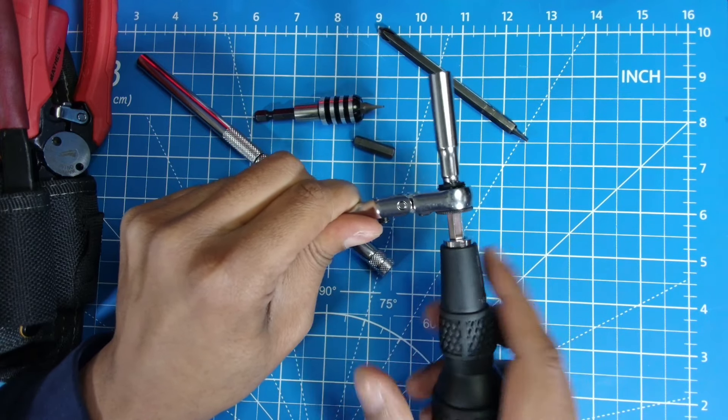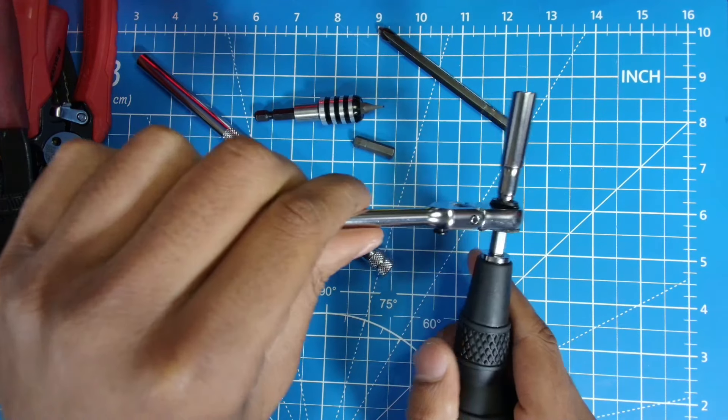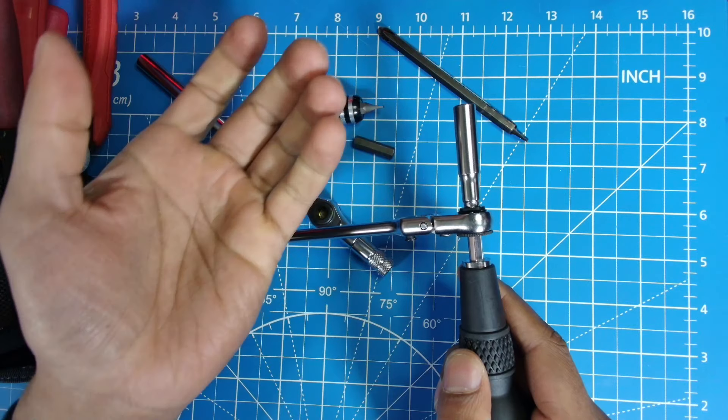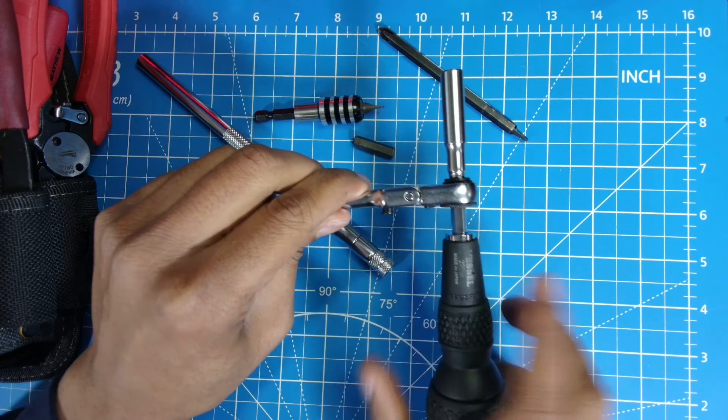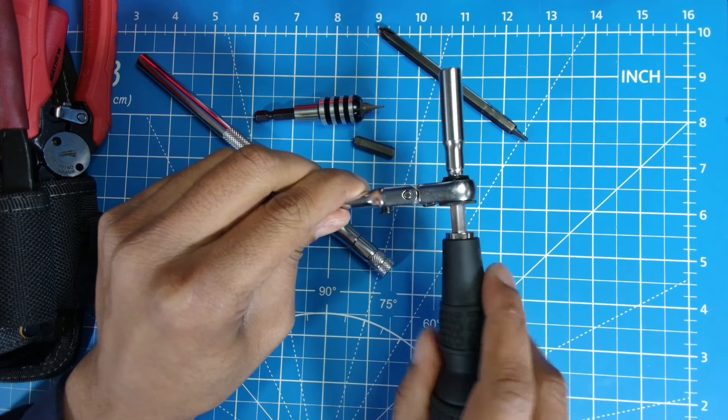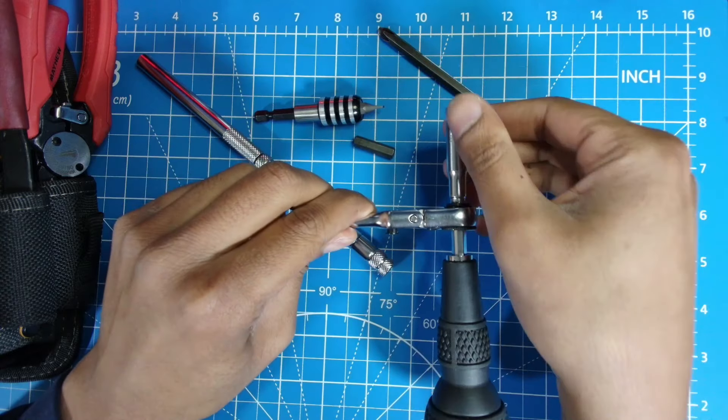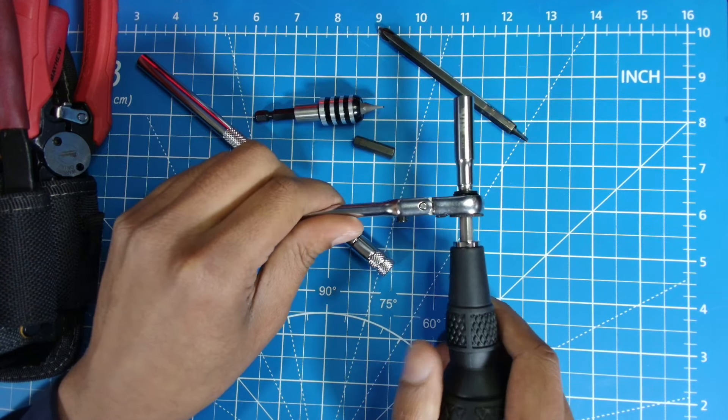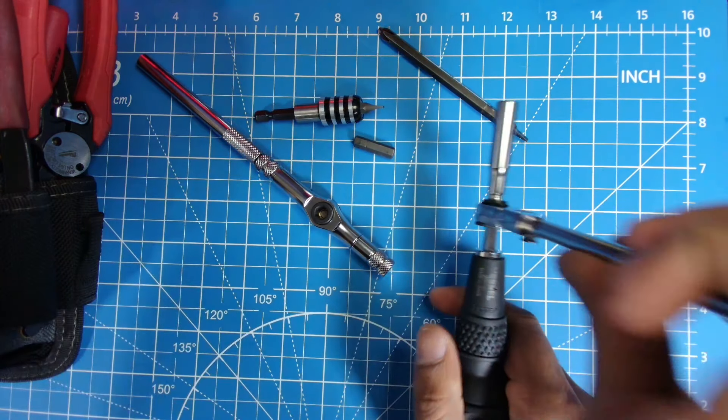What this allows me to do is sometimes you want to ratchet down on a screw but you can't because it's too loose in the threading, right? So you just do it by hand this way. And when it gets tighter and you need to torque it down, then you switch over to this portion.